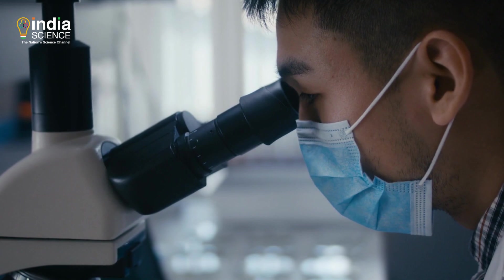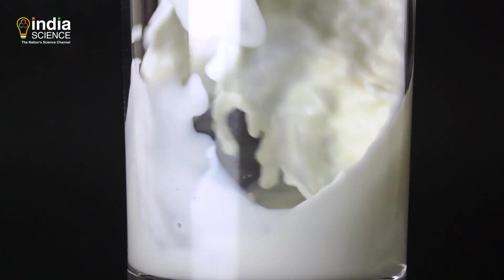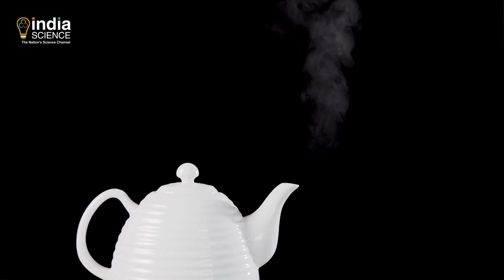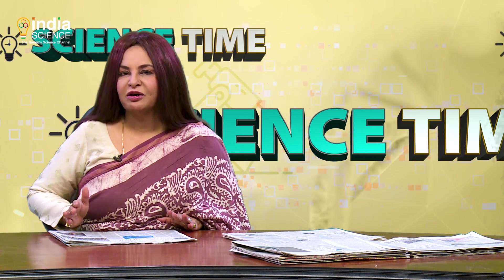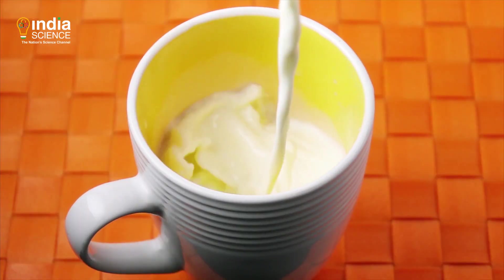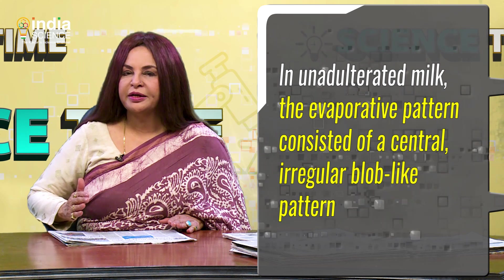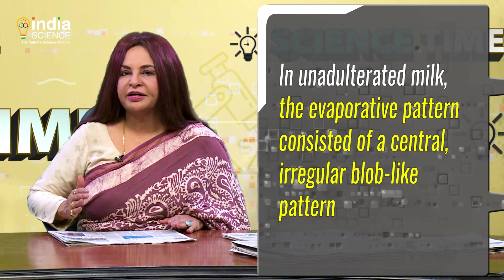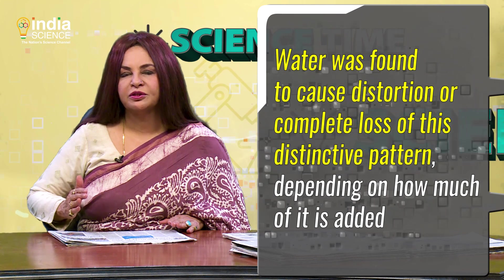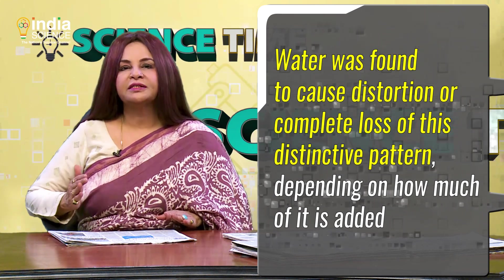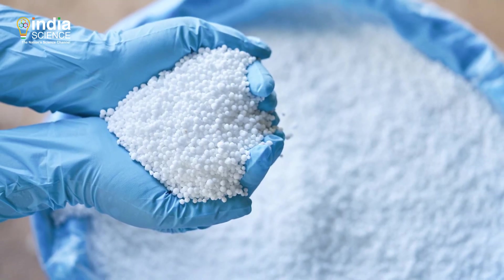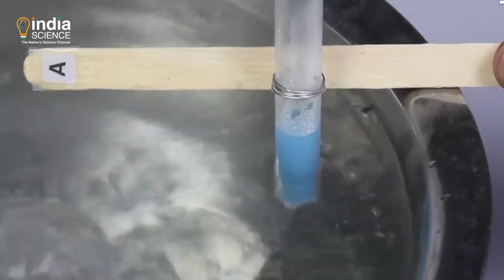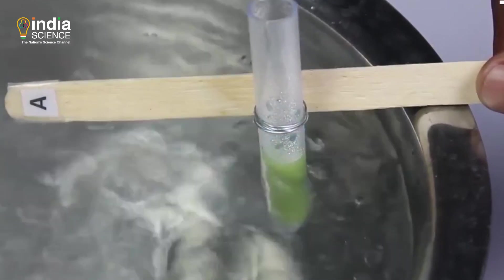In their study, the researchers looked at evaporative deposition patterns — those that emerge when a liquid mixture like milk completely evaporates, causing volatile components to dissipate and solids or non-volatile components to arrange themselves in distinctive patterns. Milk with and without water or urea showed very different evaporative patterns. In unadulterated milk, the evaporative patterns consisted of a central irregular blob-like pattern. Water was found to cause distortion or complete loss of this distinctive pattern depending on how much is added. Urea also completely erases the central pattern; being a non-volatile substance, it does not evaporate but instead crystallizes, starting at the interior of the milk drop and extending along the periphery.